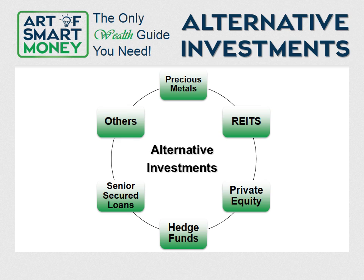This is the last portion of the video: alternative investments. The category of alternative investments has grown considerably after the 2008 crisis. It's any investment that falls outside of the basics — stocks, bonds, mutual funds, and annuities. This includes things like precious metals, REITs (Real Estate Investment Trusts), private equity, hedge funds, senior secured loans, and many others. I'm a big fan of alternative investments, but you have to make sure it's right for you because they can be a lot more volatile. These types of investments are often very high risk and require specialized knowledge to use effectively, so it's usually advised that you consult a professional.